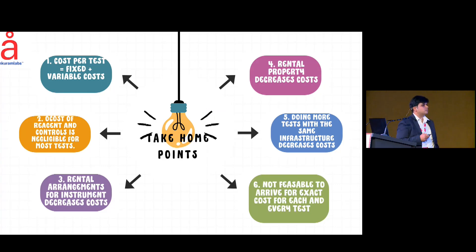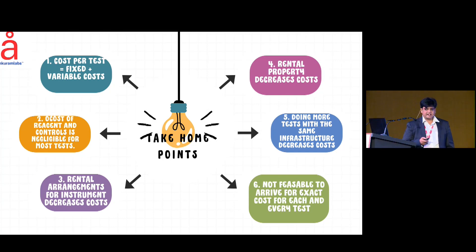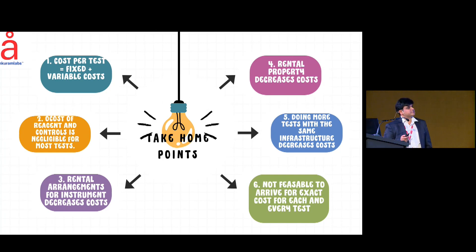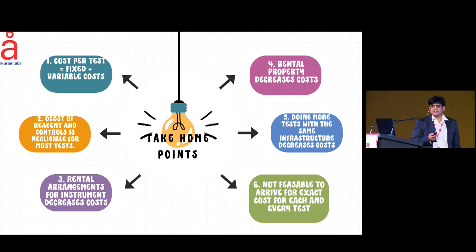The take-home points: cost per test equals fixed plus variable cost. The cost of reagents and controls is negligible for most tests. A rental agreement for instruments decreases cost. Renting property also decreases cost. Doing more tests with the same instrument decreases cost. And it is not feasible to arrive at an exact cost for each and every test in the lab.